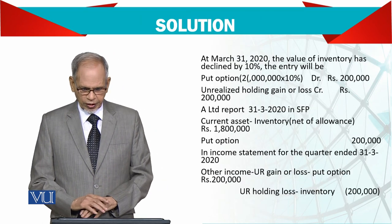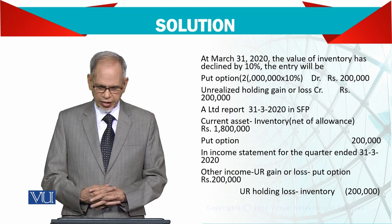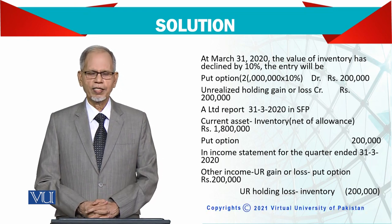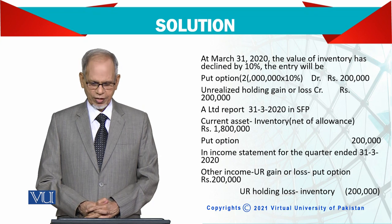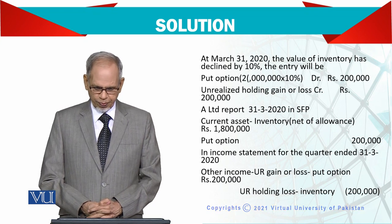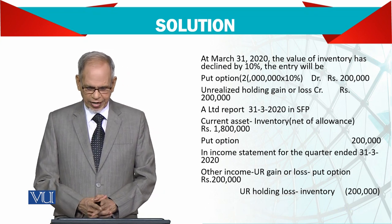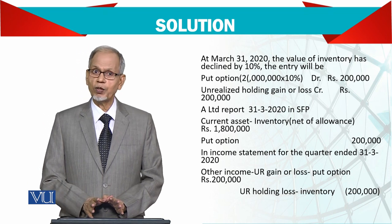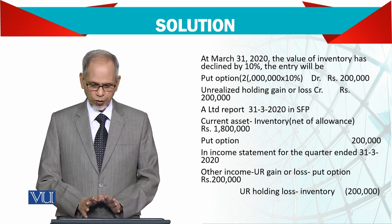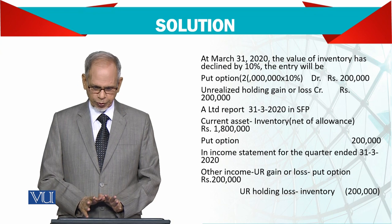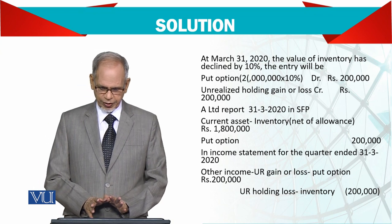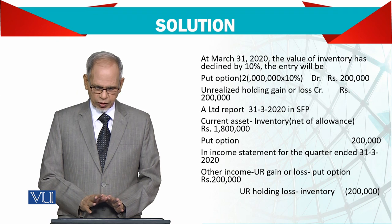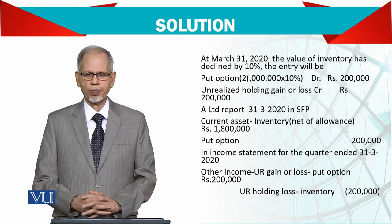Now, as of 31st March, the value of the inventory has declined by 10%. The inventory value has become less by 10%. The put option, which is the fair value hedge instrument, increases in value accordingly. The decline is 10% of 2 million, which is 200,000. An unrealized holding gain on the put option and an unrealized holding loss on inventory of 200,000 need to be recorded.